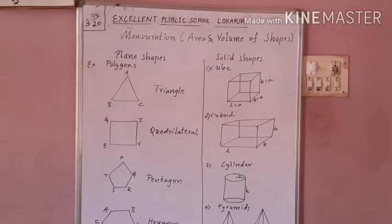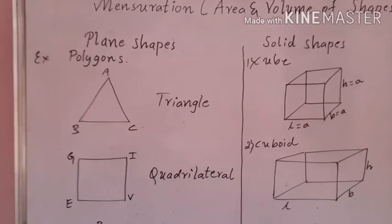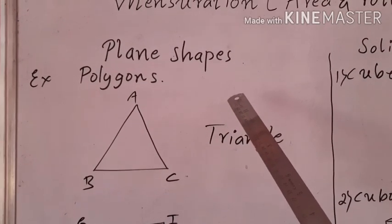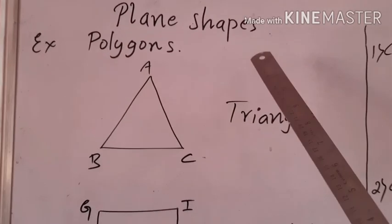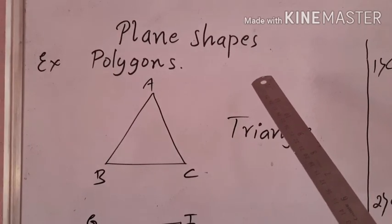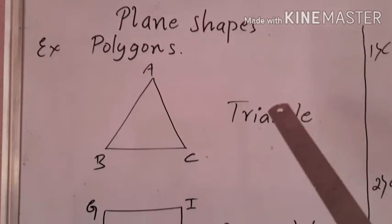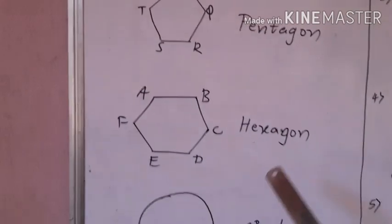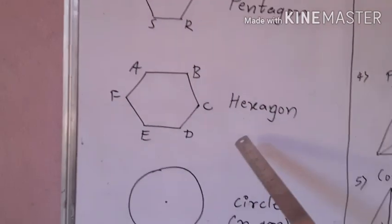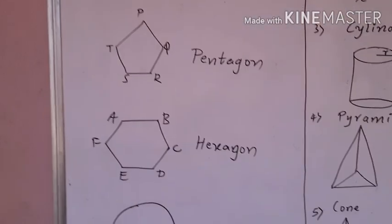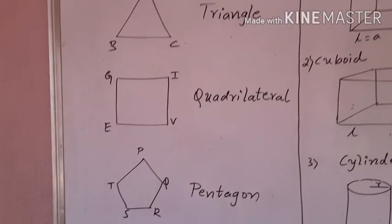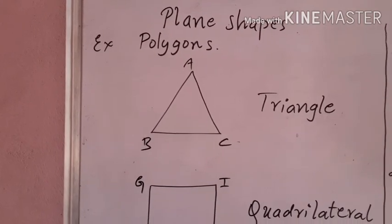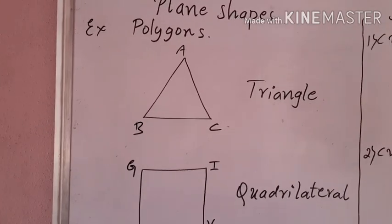Look at the board, children. First, let us go to the plane shapes, which are 2D shapes. You might have heard the examples like triangle, quadrilateral, pentagon, hexagon, and circle. These are all examples for the plane shapes. These have only area — these shapes do not have volume.